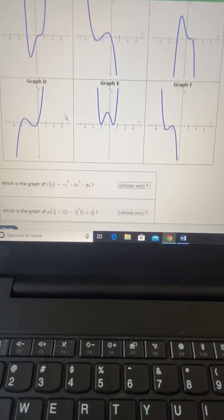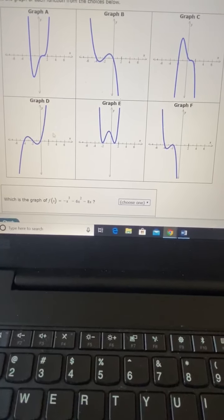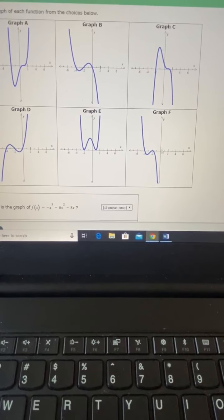Now we have two of them that kind of do that, right? So a doesn't do that, d doesn't do that, e doesn't do that, c doesn't do that, but b and f both do that.